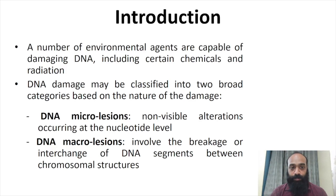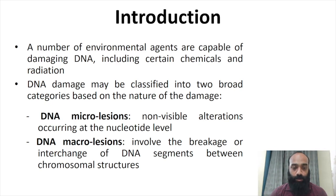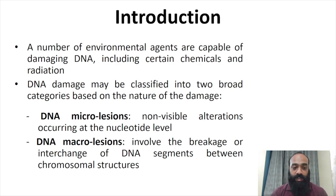To begin with the different types of DNA damage, it is important to understand that there are a number of chemicals that can cause damage to DNA in different forms. These chemicals can damage the bases, damage the structure of the DNA, and many other things. According to the type of damage they cause, they can be classified into DNA microlesions or DNA macrolesions. DNA microlesions occur at the nucleotide level and are non-visible alterations, while DNA macrolesions involve chromosomal structures where breakage, interchange, or degradation of fragments occurs.